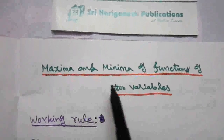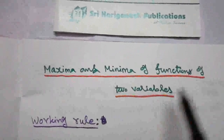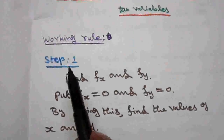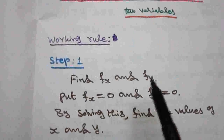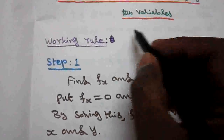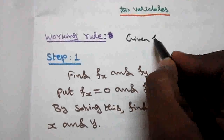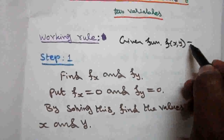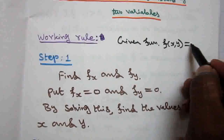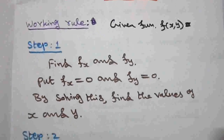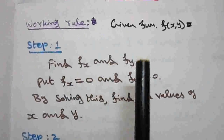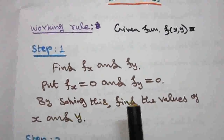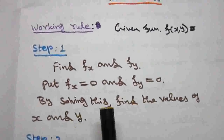Maxima and minima of a function of two variables. Working rule, step one: find fx and fy from the given function f(x, y). Put fx equal to zero and fy equal to zero, and by solving these equations we get the values of x and y.